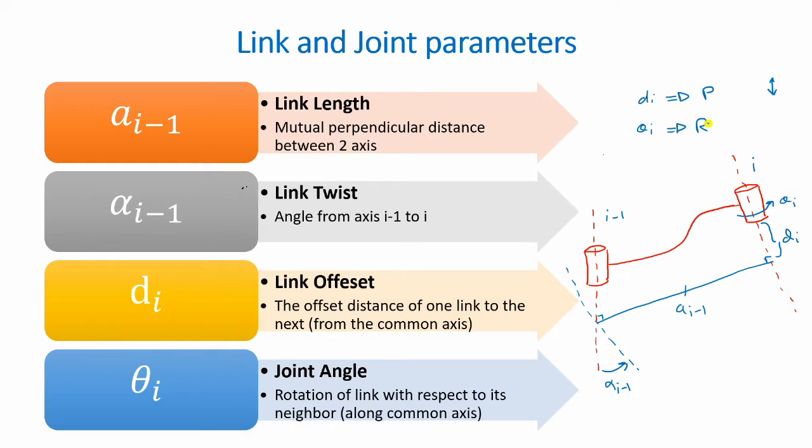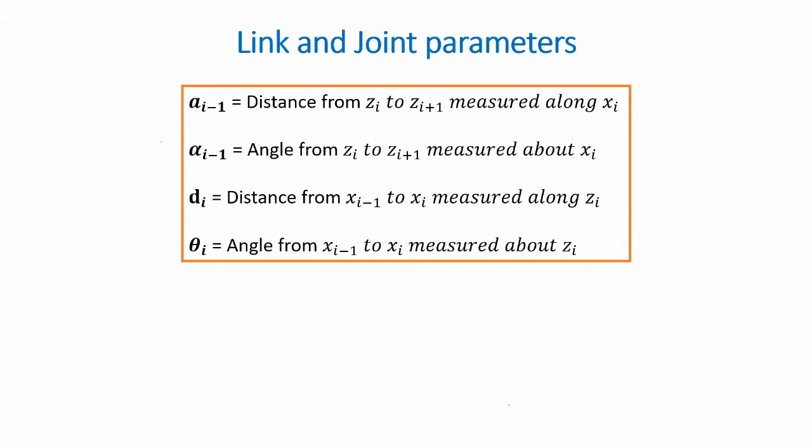Which means revolute joints should have a 0 d i, while prismatic values should have a 0 theta i. So these are the four definitions that we will be using to find these four parameters. It is best to keep these definitions in mind and understand them, as it would make problem solving much easier.